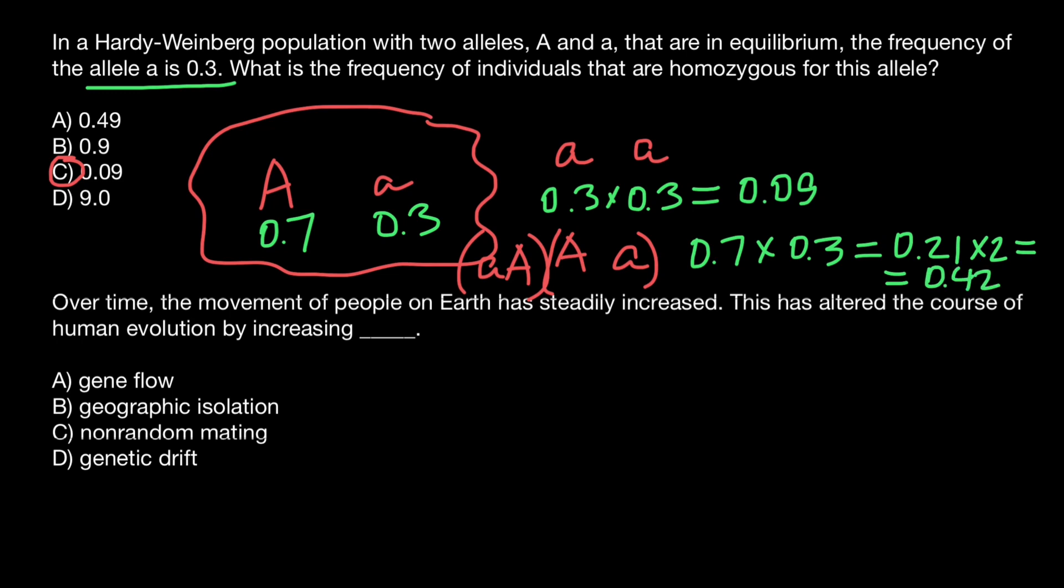So you have to remember that in order to find the frequency of the heterozygous genotype, we have to multiply the frequency of the dominant allele by the frequency of the recessive allele and multiply by two, because two variants are possible. And the second question.